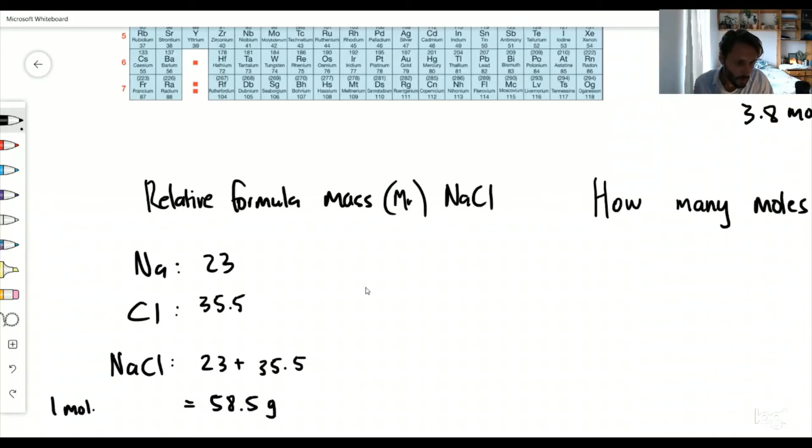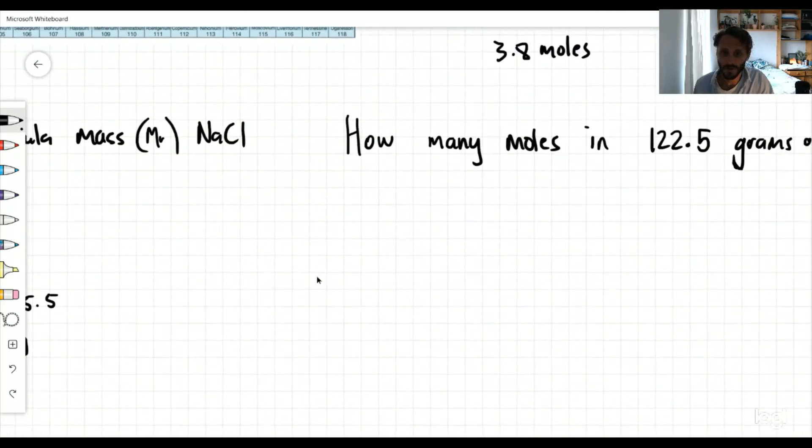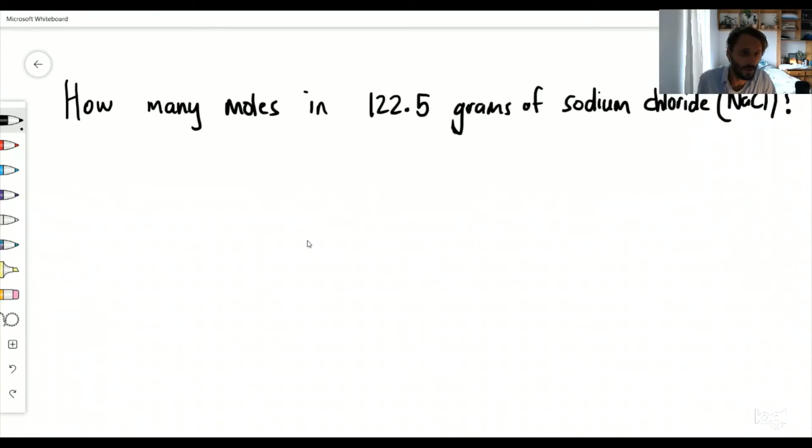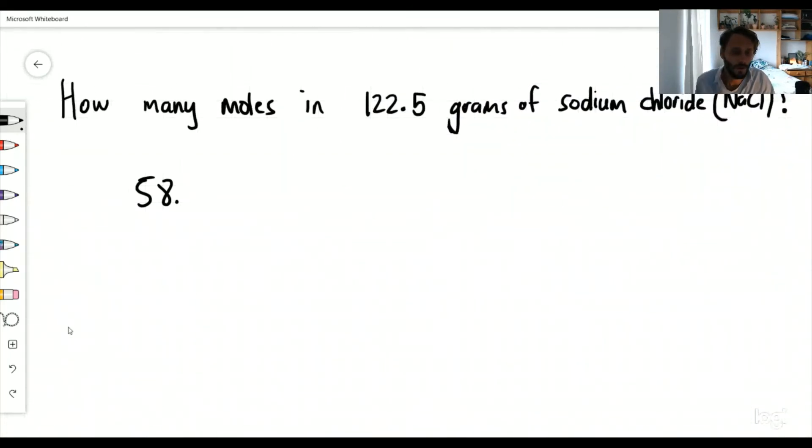That's one mole of NaCl gives me that amount. So if I write on my board, 58.5 grams is one mole of NaCl. We want to try and figure out how much is 122.5 grams. How many moles is this? This is what we are looking for.